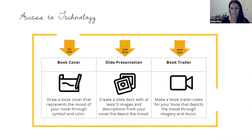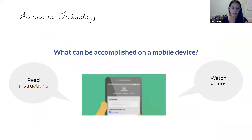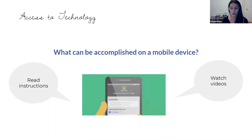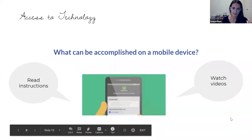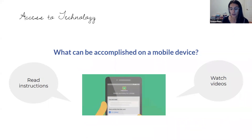Whenever possible, if access to technology is an issue, think about how the application could be done with or without technology, and whether there's a paper-based option you could provide. What could be accomplished on a mobile device? If you're using Google Classroom as your LMS, there's a great app — parents or students can download it onto their phone. It could be as simple as making sure all the instructions for your asynchronous work are on Google Classroom accessible via phone. Reading instructions, watching videos, and taking pictures of work to add as evidence of student work can all be accomplished on phones quite easily.